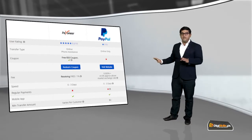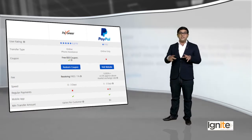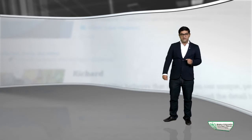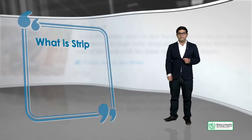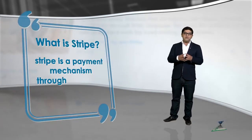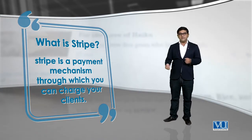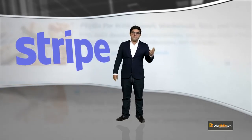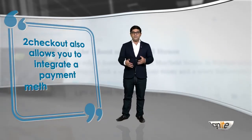There is another payment platform — the name is Stripe. Stripe is a payment mechanism through which you can charge your clients or customers online, and they can swipe their credit card and buy products on your website. There is also a payment platform called 2Checkout, which also allows you to integrate a payment method on your website.